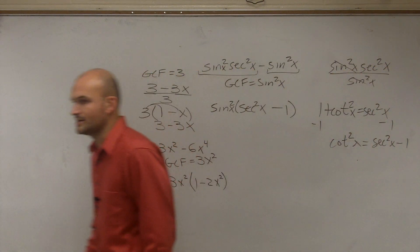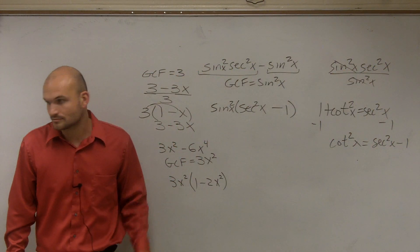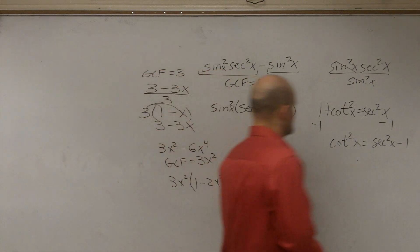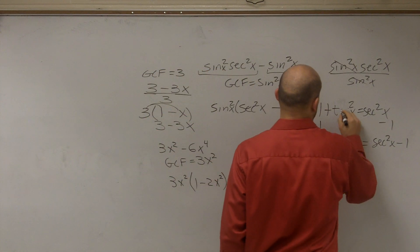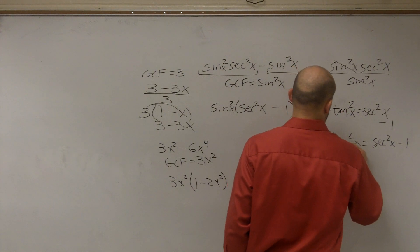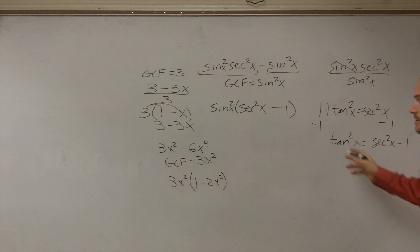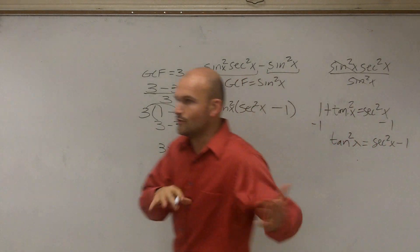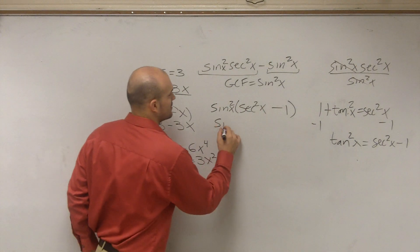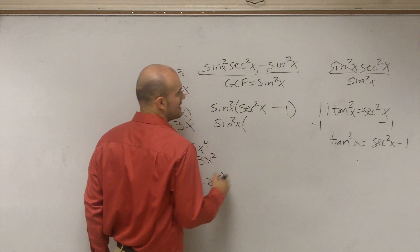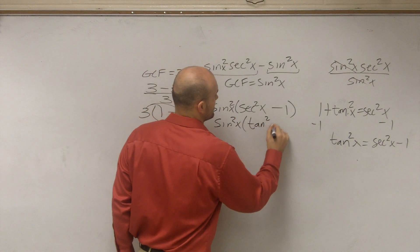Does everybody follow me what I did? I just rewrote it. I thought it was tangent, not cotangent. It is tangent, not cotangent. Thank you. I even messed up my problem. So yes, it's going to be tangent squared of x. Does everybody see how I manipulated my original equation? So therefore, I can say that sine squared of x times tangent squared of x.